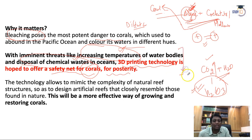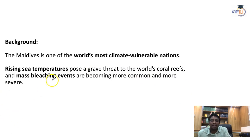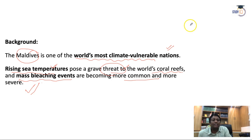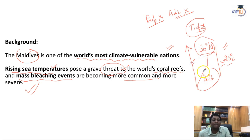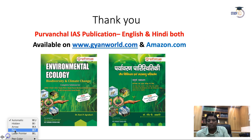3D printer technology offers a safety net for corals — an effective way of growing and restoring corals in the Maldives. The Maldives is one of the world's most climate-vulnerable nations. Rising sea temperatures are the main threat to the world's coral reefs, and mass bleaching events are becoming more common and severe. Corals grow in tropical regions between 30 degrees north and 30 degrees south, requiring an average temperature of around 25 degrees Celsius (±2°C). Global warming increases atmospheric and water body temperatures, directly threatening corals.